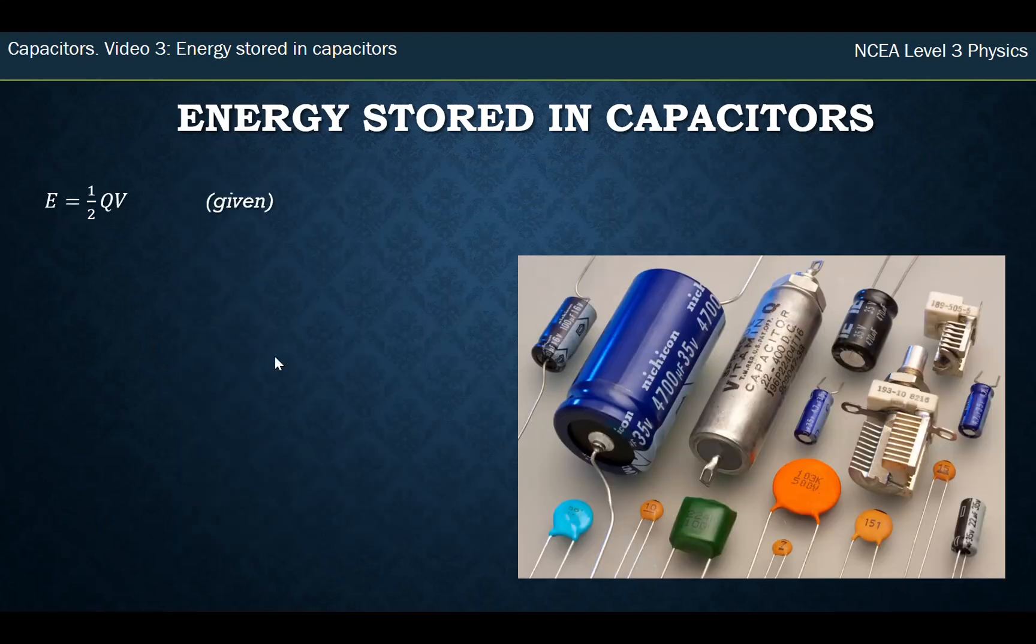So the formula you are given in your formula sheet looks like this: E = 1/2 QV. Remember, Q is the charge on the capacitor plates, and V is the voltage applied to charge that capacitor.